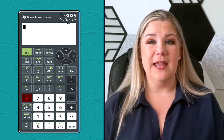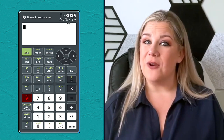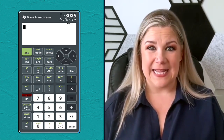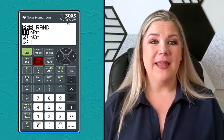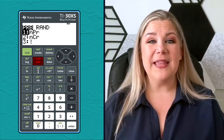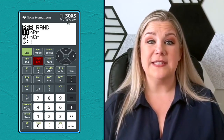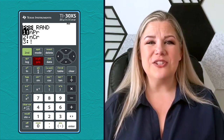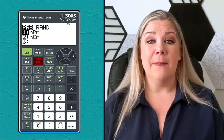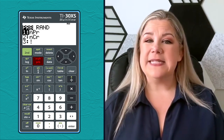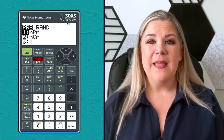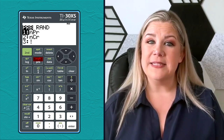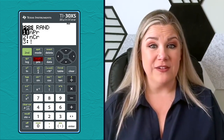The x-squared key squares a number, essential for any quadratic equation, and its secondary function is the square root. Moving to the middle column, the PRB key stands for probability and gives you access to probability-related functions like permutations, combinations, and factorials. These are especially useful in statistics, combinatorics, and probability problems. Its secondary function, angle, lets you choose how angles are displayed — in degrees, radians, or gradients — which is essential for working with trigonometric functions.